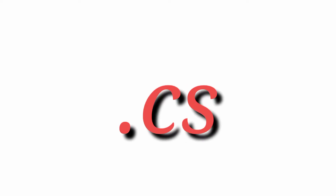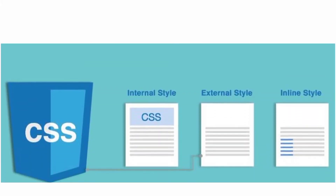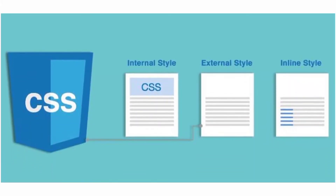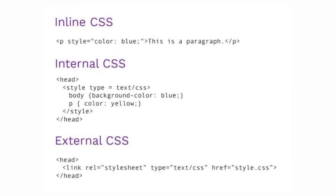In upcoming tutorials I will be explaining CSS version 3. Generally we save the CSS file with a .css extension. You can use CSS in three types: inline CSS, internal CSS, and external CSS. If you are using external CSS, we save the file as .css. If you are using internal CSS, we write it inside the style tag, inside the body tag.